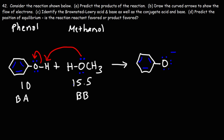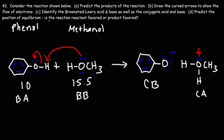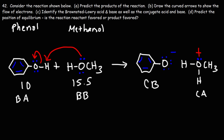Phenoxide will have a negative charge. We add the hydrogen to methanol, giving us the conjugate acid of methanol. Whenever you take away a hydrogen you create the conjugate base; when you add a hydrogen you get the conjugate acid. This completes part c — identifying the Brønsted-Lowry acid and base as well as the conjugate acid and conjugate base. The conjugate acid and conjugate base are on the right side; the Brønsted-Lowry acid and base are on the left side.